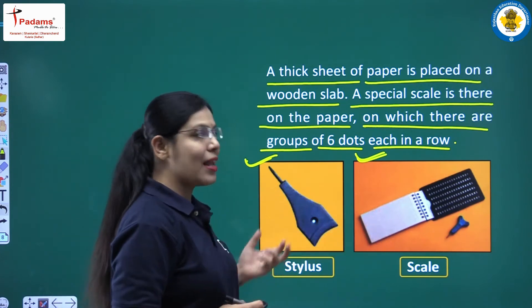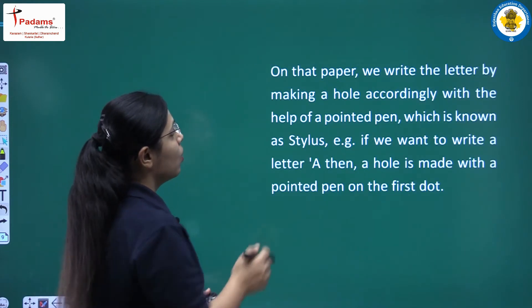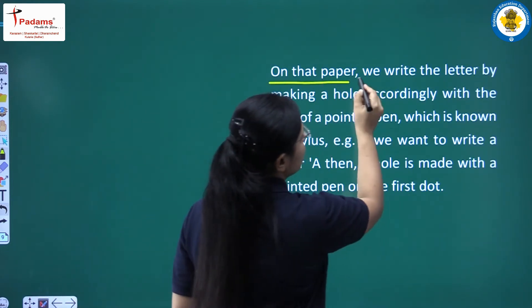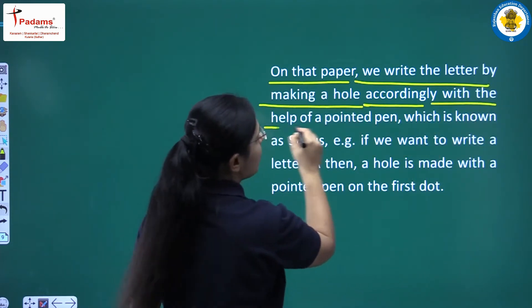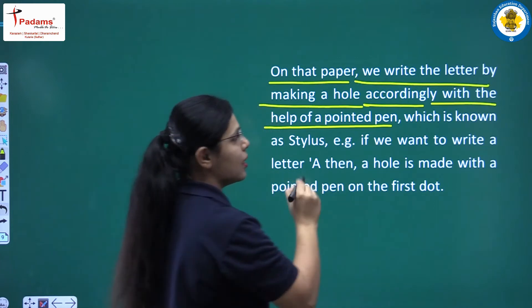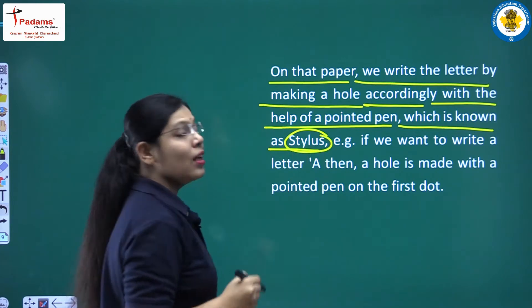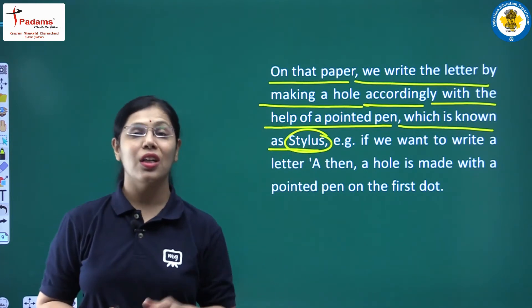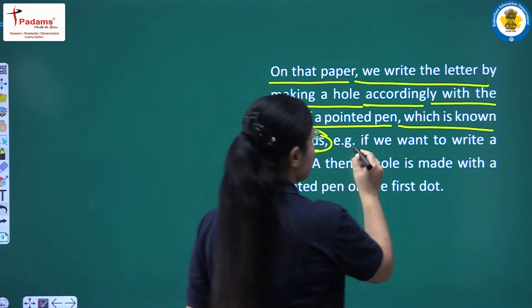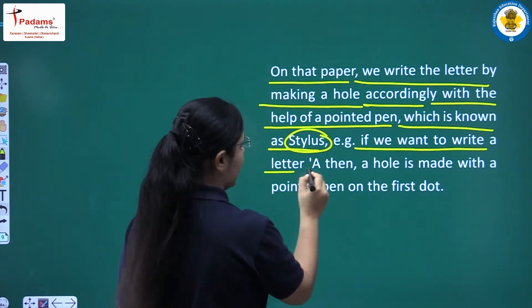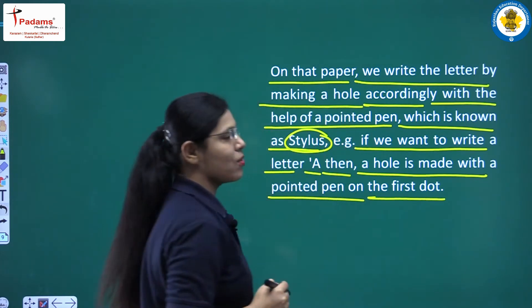So these are the pictures of stylus and scale. On that paper we write letters by making holes accordingly with the help of a pointed pen, and this pointed pen is known as a stylus. So now you know that the pointed pen used in Braille script is known as a stylus. If we want to write the letter A, then a hole is made with the pointed pen on the first dot.